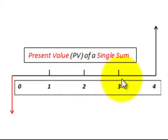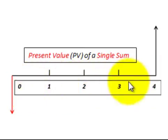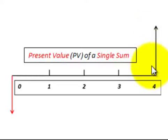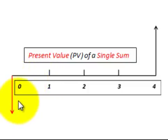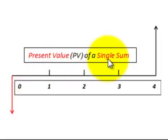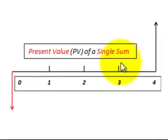We'll use these all in terms of years here from zero to four years. We have a future amount known out here and we have to discount it back to determine its present value. This is just a single sum that we're discounting back, so we'll use a present value single sum function or table.